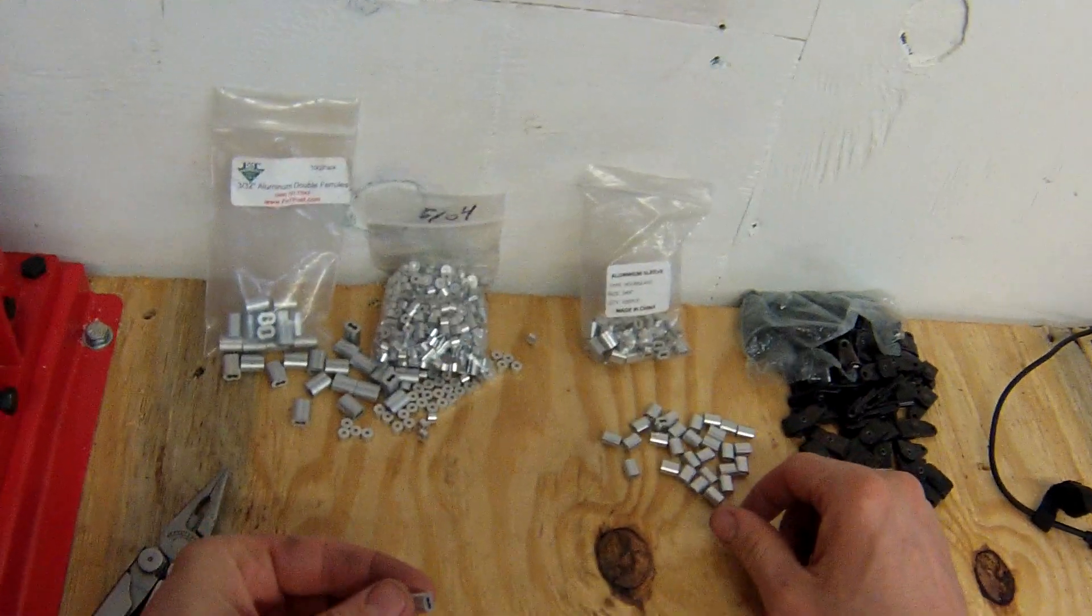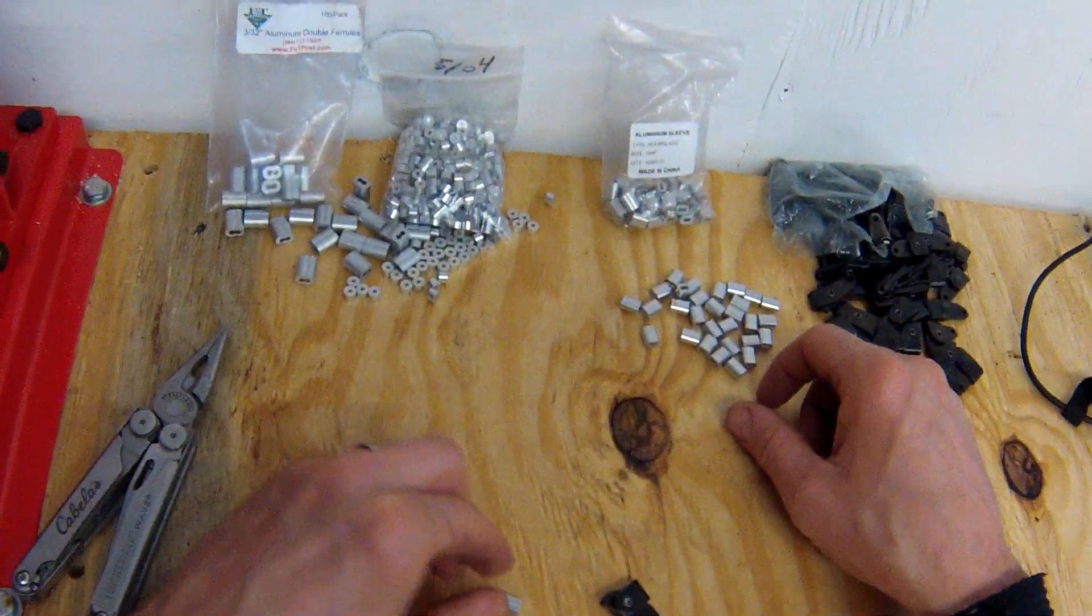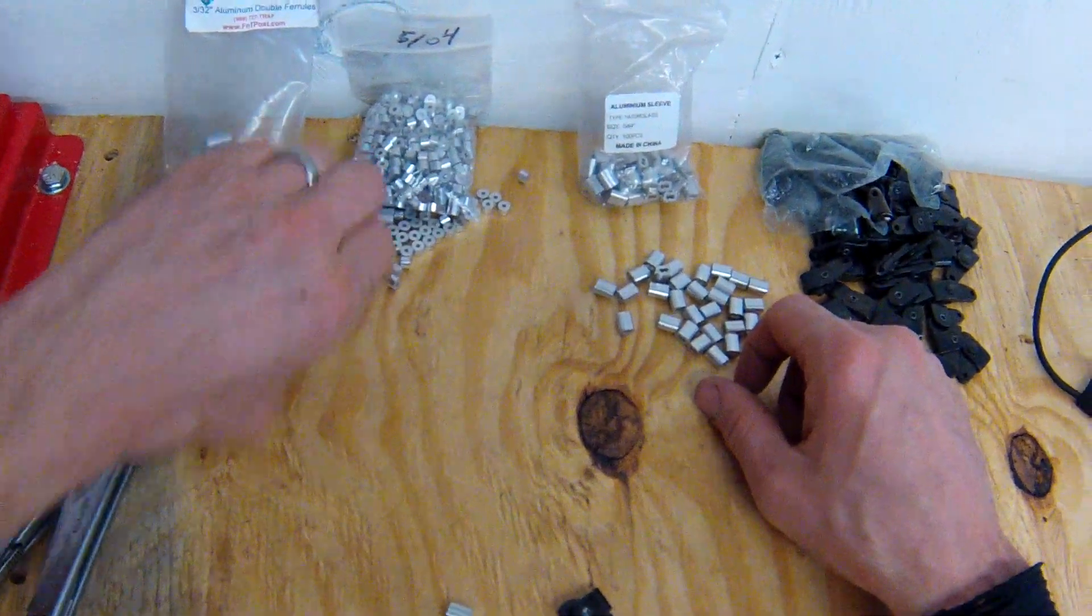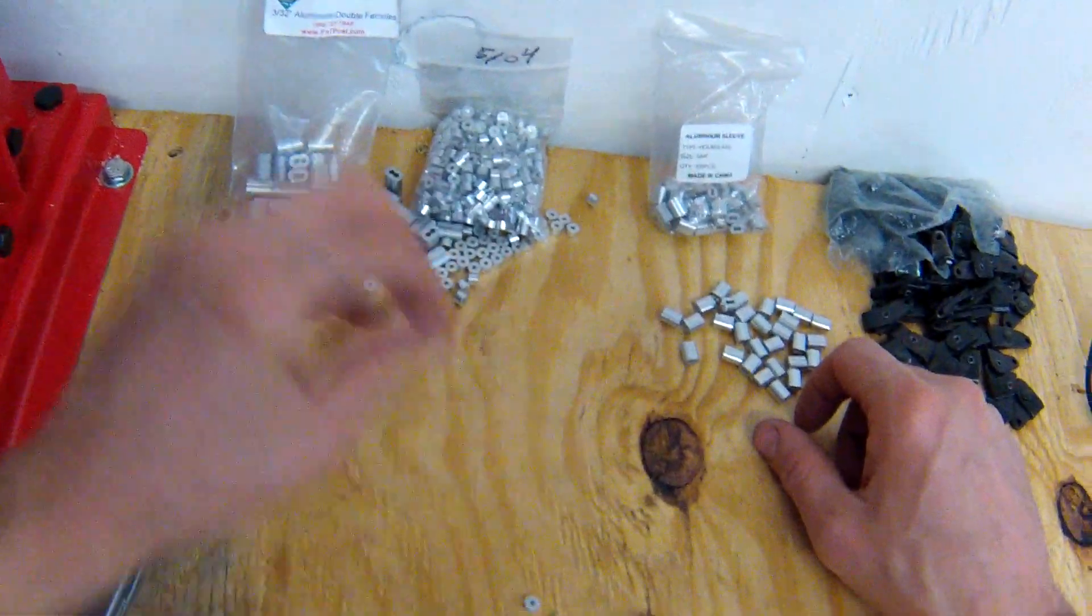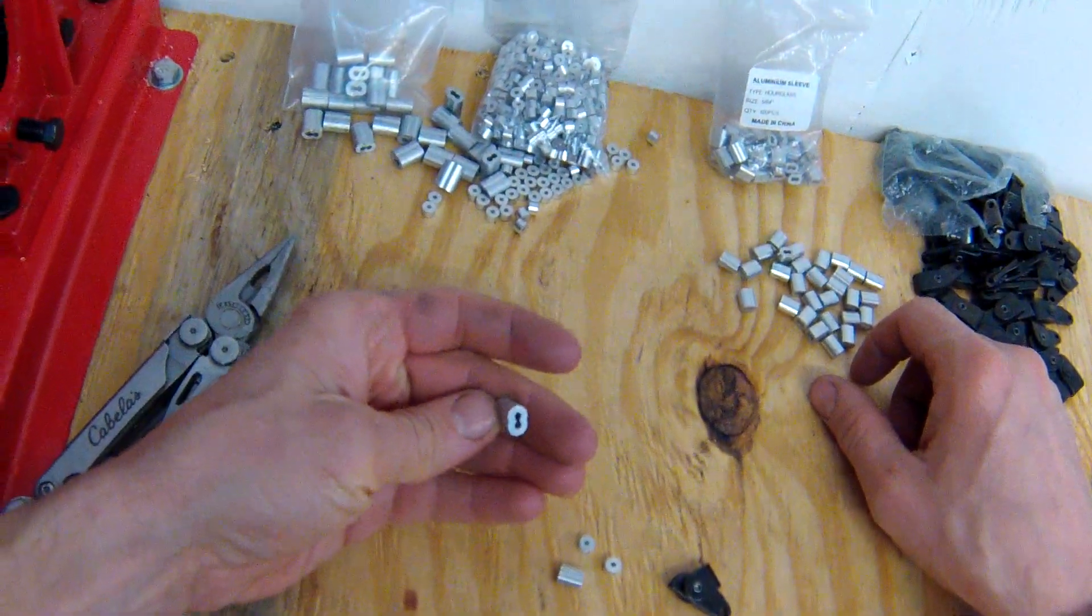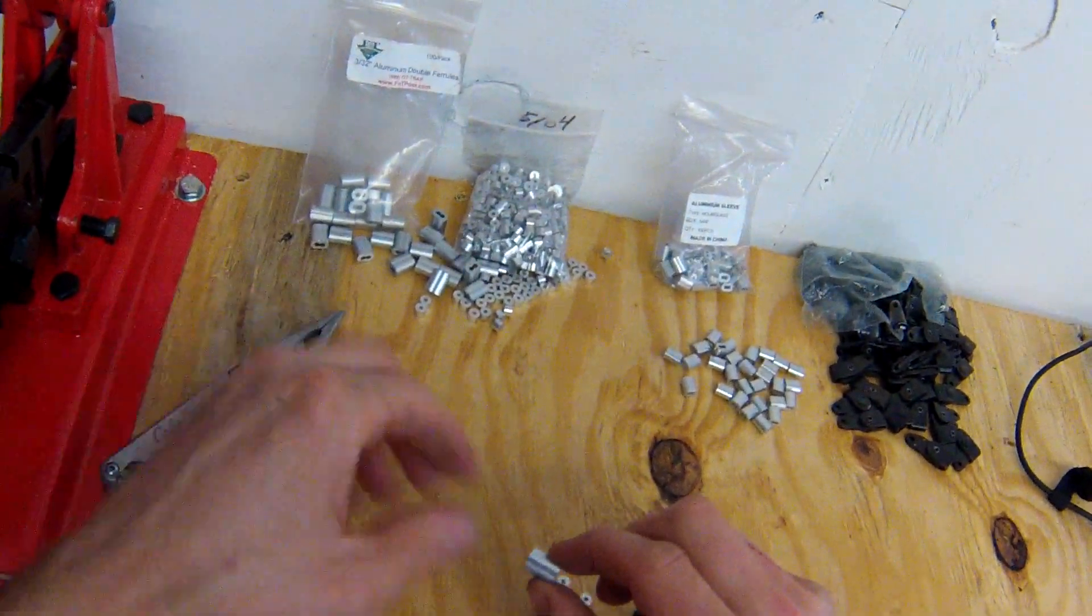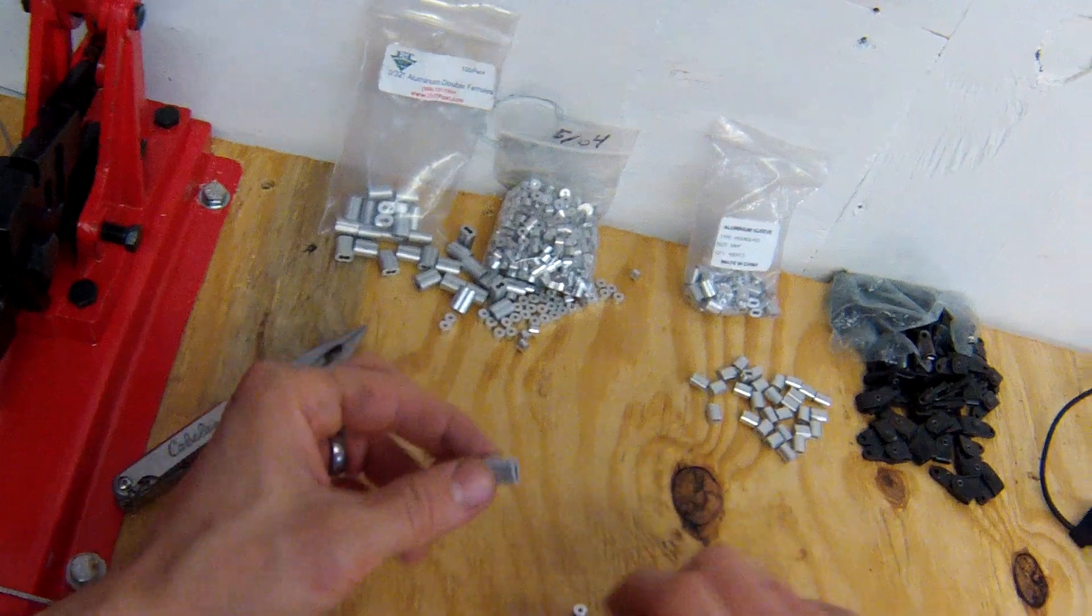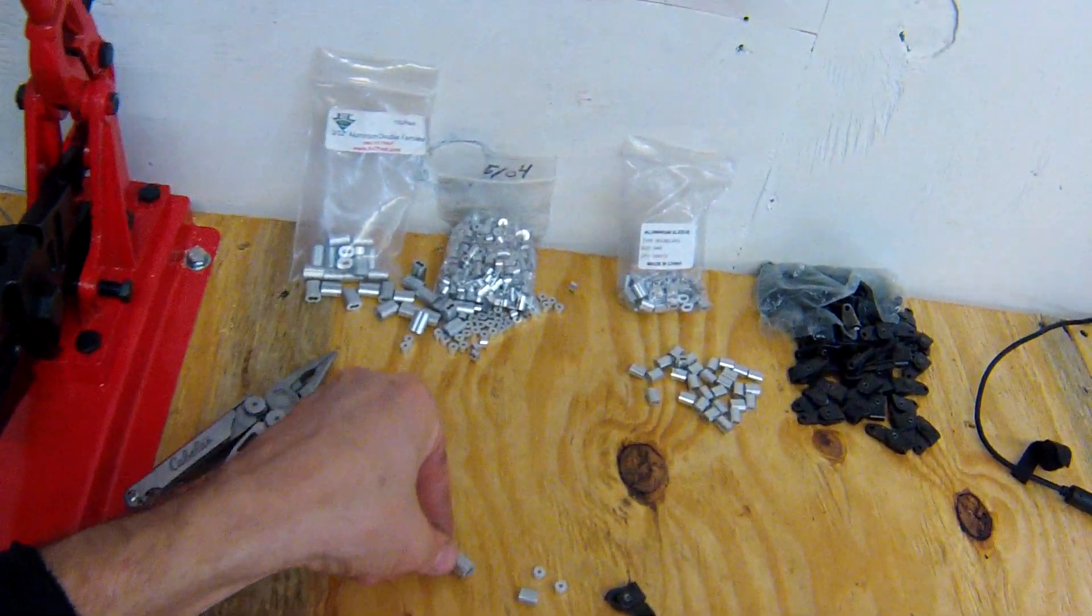Then we have aluminum double ferrule, again 5-64ths to fit that cable, and a couple of aluminum stops. Finally, we'll use a 3-32nds aluminum double ferrule to hang our snare - you'll see how I do that later. You can also use regular plastic tubing to accomplish the same thing.